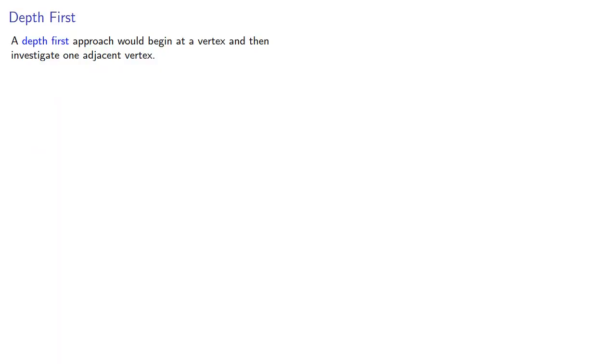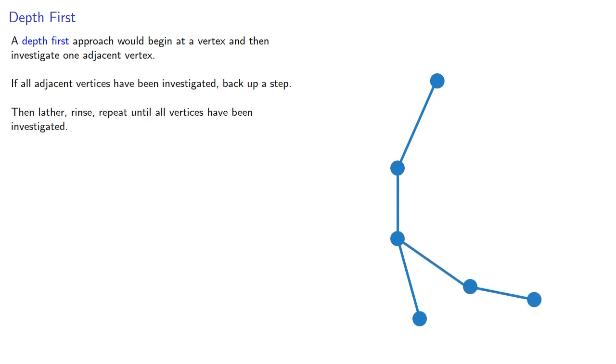In contrast, a depth first approach would begin at a vertex and then investigate one adjacent vertex and again and again. Then, if all adjacent vertices have been investigated, we'll back up a step, then lather, rinse, repeat until all vertices have been investigated. And intuitively, because we do have to check out the adjacent vertices, we'd choose the vertex with the fewest incident edges.